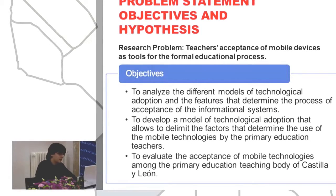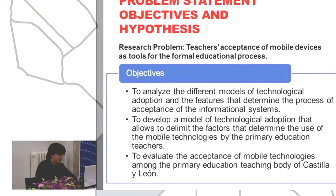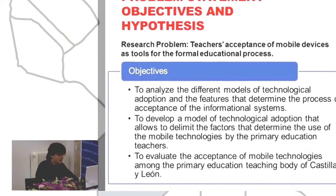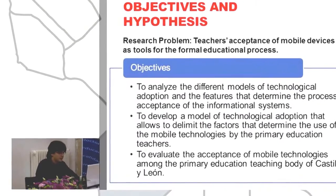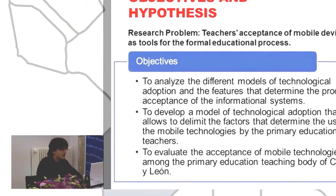We propose three main objectives: to analyze the different models of technological adoption and the features that have determined the processes of acceptance of information systems; to develop a model of technological adoption that catalogs the limiting factors in determining the use of mobile technologies by primary education teachers; and to evaluate the mobile technology acceptance among primary education teachers.